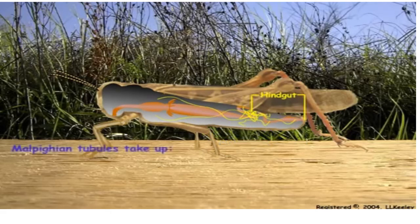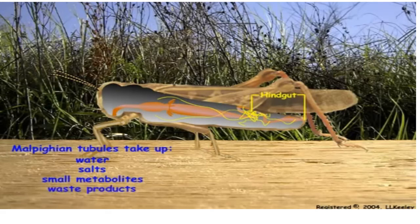Malpighian tubules filter the hemolymph and form a urine containing water, salts, small metabolites, nitrogenous waste products, and any toxic chemicals that are present.